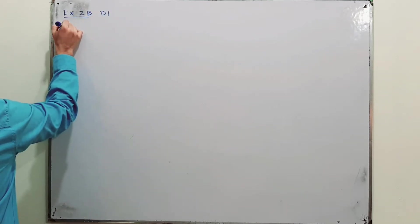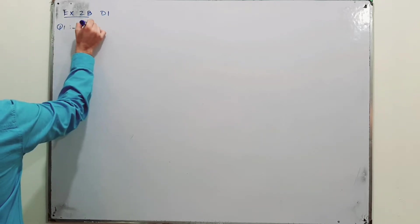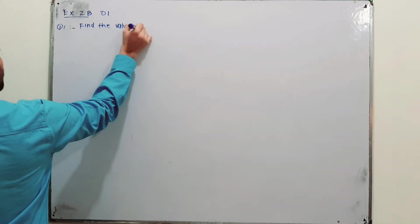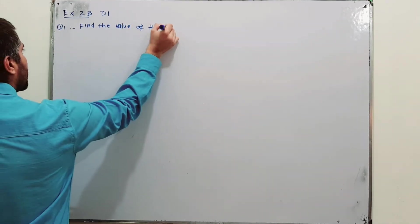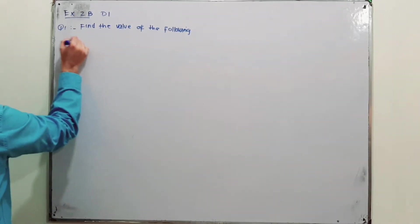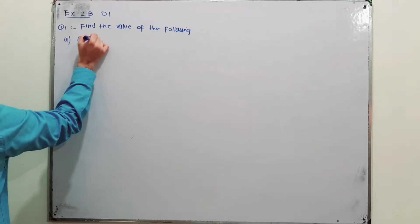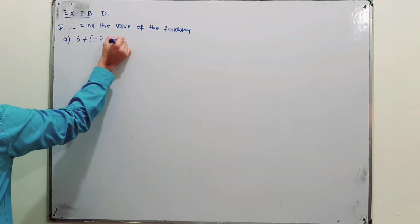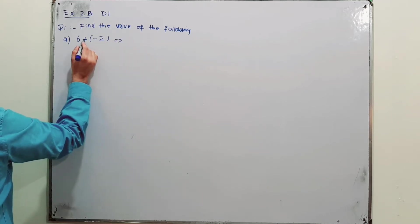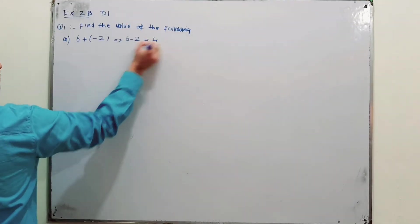Question number 1: Find the value of the following. Part A is 6 plus (minus 2). When you open the bracket, the minus will overcome the plus sign — it will become 6 minus 2, and the result will be 4.